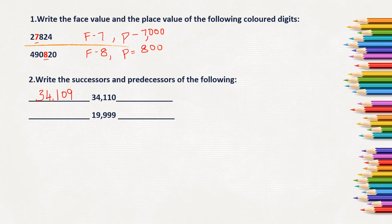The successor means when you add one to the given number, you will get its successor — the after number. The after number of 34,110 is 34,111. Next, the predecessor of 1,99,999 is 1,99,998, and the successor is 2,00,000.